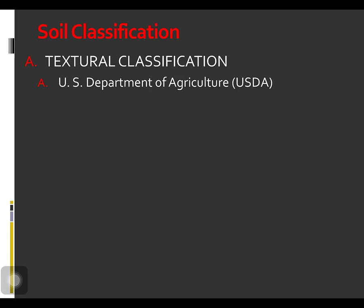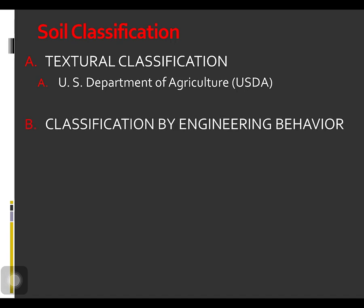Because textural classification systems do not take plasticity into account and are not totally indicative of many important soil properties, they are inadequate for most engineering purposes. Currently, two more elaborate classification systems are commonly used by soil engineers. Both systems take into account the consideration of particle size distribution and Atterberg limits.